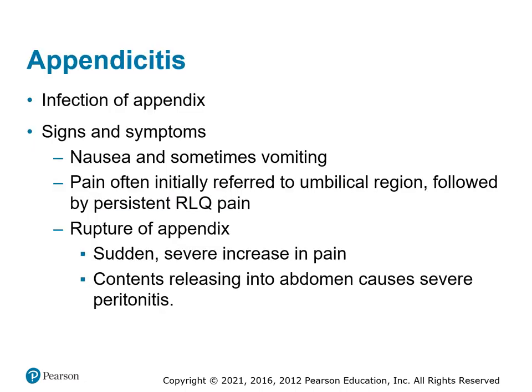Some abdominal conditions we'll run into: appendicitis is in the lower right quadrant, somewhere around the umbilical region to the right. First question to ask is whether they've ever had appendicitis and if the appendix was removed — if so, you can rule it out. They typically have nausea and vomiting and will be in the fetal position, pulling their legs up to take the pressure off the abdominal muscles. If the pain suddenly gets better, it's possible that the appendix ruptured, with potential for infection spreading throughout the abdominal cavity.